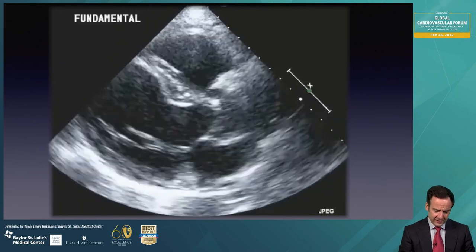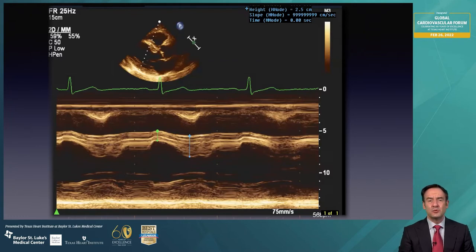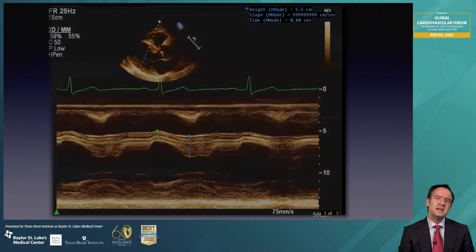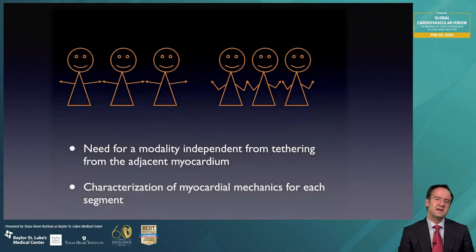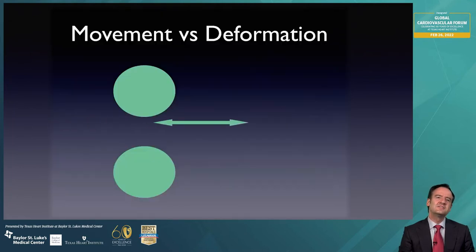So what are the alternatives? I could use M-mode for each of the segments of the heart, but the problem is that it would be very tedious and time-consuming. What I really need is a modality that will be independent from tethering from the adjacent myocardium — one that will allow me to do characterization of myocardial mechanics for each of the segments. And that is strain.